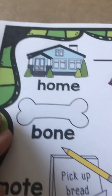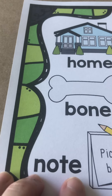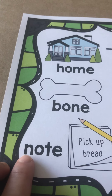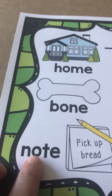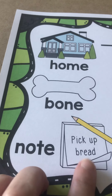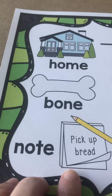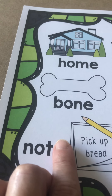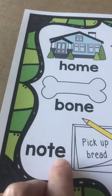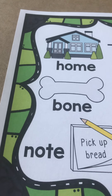The silent E is going to make that O say O. It says N-O-T, note. Like it says, pick up bread — that's a note somebody wrote. Now if we were not to have that E, that would be N-O-T, not. But when we have the E, the E makes the O say O. So it's N-O-T — it's a completely new word with the E.